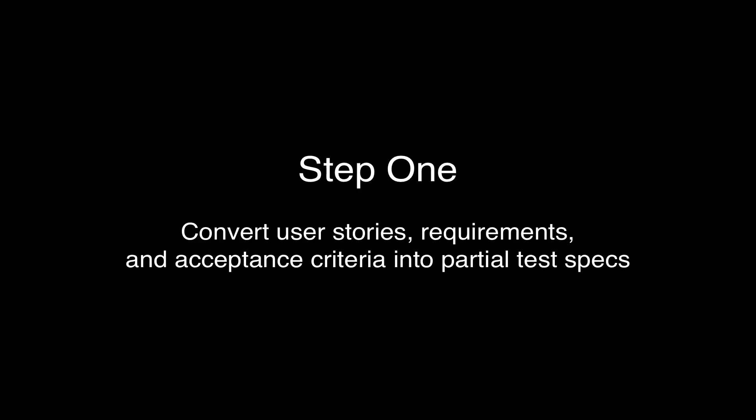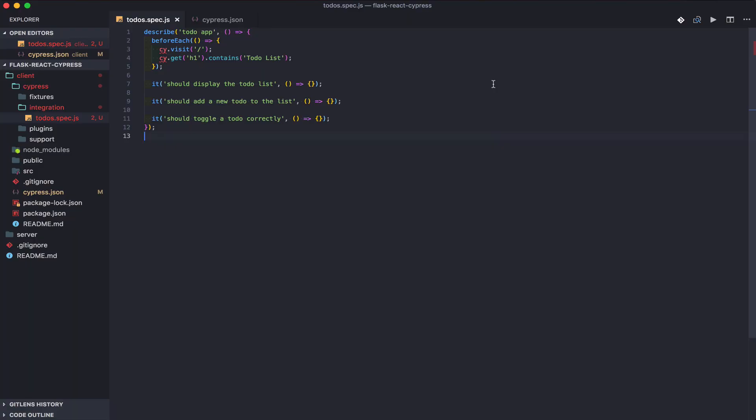So in step one, I'll start by converting the user stories, requirements, and acceptance criteria into the partial test specs. You can see the actual specs here.